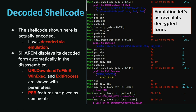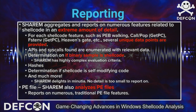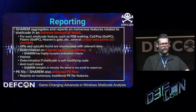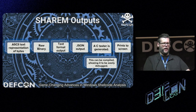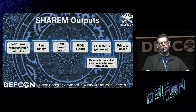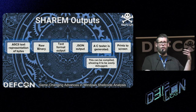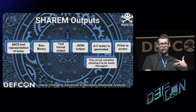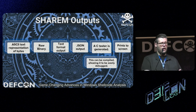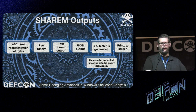In one decoded shellcode example, we can clearly see that it downloads an evil.hta and then calls WinExec on it. In terms of reporting, Sherem provides verbose output in many formats: ASCII byte representation, raw binary, text format, and JSON. You can run Sherem headless and integrate it into a web server or web service. It also generates a C-style tester that you can compile and run in a debugger.